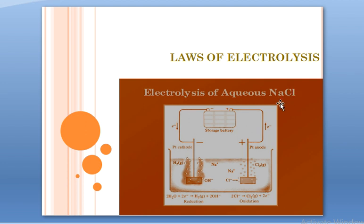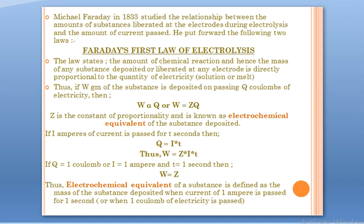As a reminder of what we did previously — electrolysis of aqueous NaCl — the products are hydrogen gas released at the cathode and chlorine gas released at the anode. This was done in detail in the previous presentation. So let's continue with the laws of electrolysis.